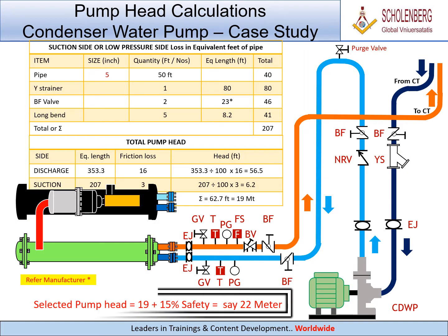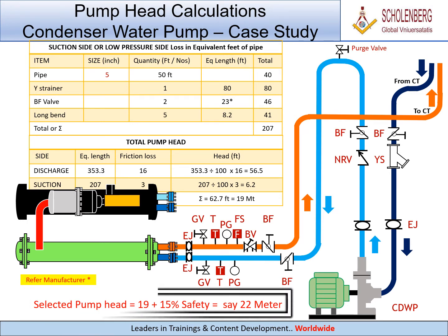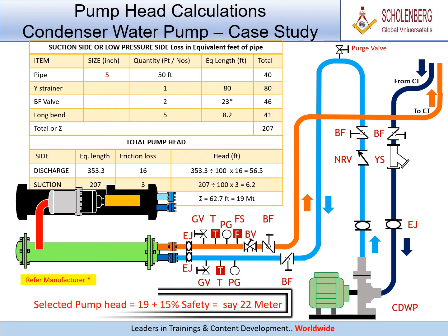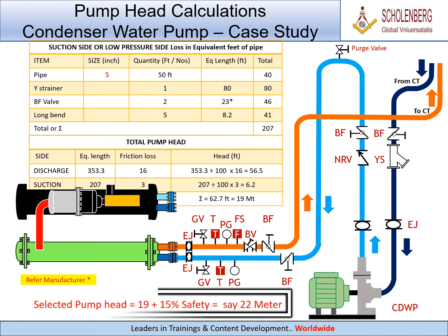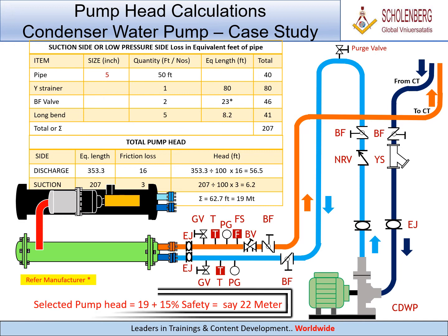Suction side or low pressure side loss in equivalent feet of pipe: total sigma equals 207 feet. Total pump head equals 19 meters. Selected pump head equals 22 meters.